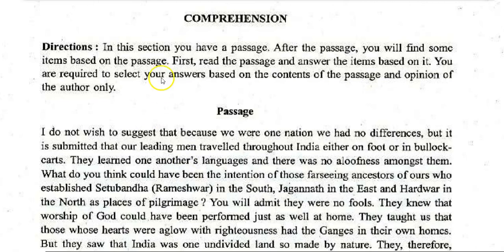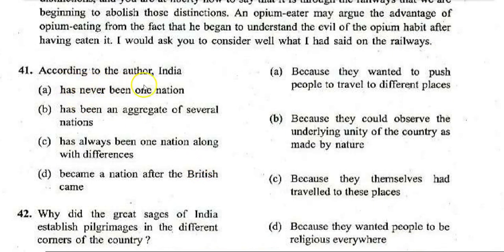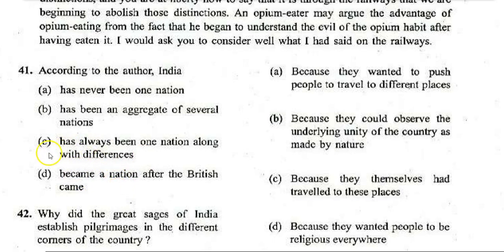Now comes the Comprehension section. According to the author, India: A. has never been one nation, B. has been an aggregate of several nations, C. has always been one nation along with differences, D. became a nation after the British came. The correct answer is C — India has always been one nation along with differences.